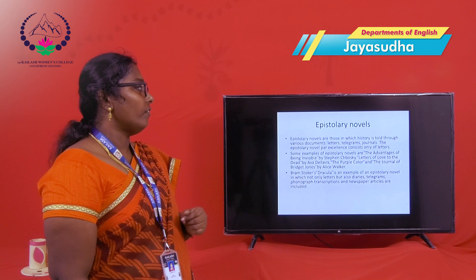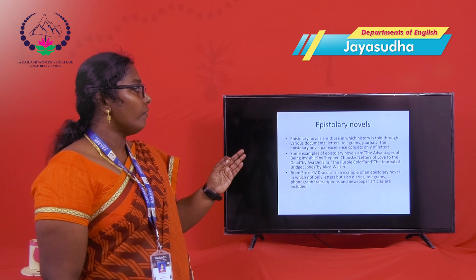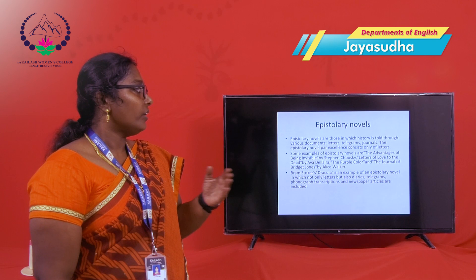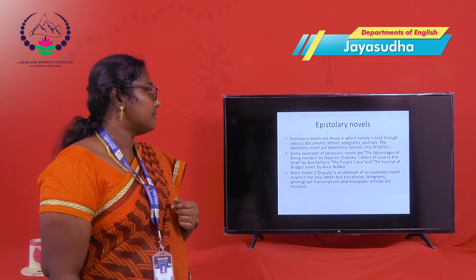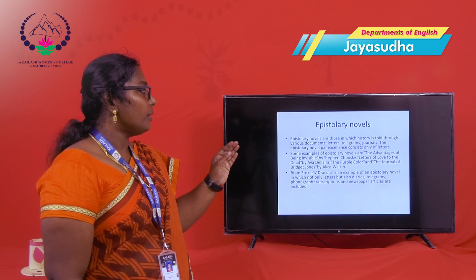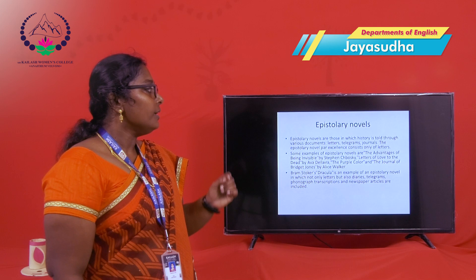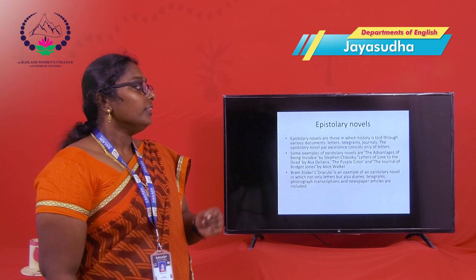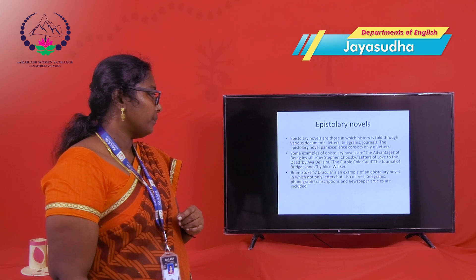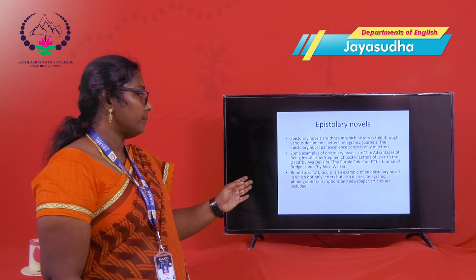Then the epistolary novel. An epistolary novel is one in which the story is told through various document forms — it may be in letter form, telegrams, journals, etc. The epistolary novel par excellence consists entirely of letters. Some examples of epistolary novels are The Perks of Being a Wallflower by Stephen Chbosky, The Color Purple, The Diary of Bridget Jones by Alice Walker, and Bram Stoker's Dracula.